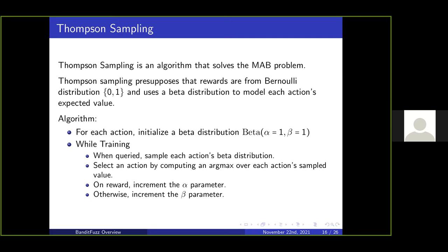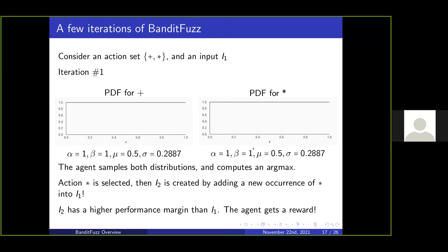For our actual agent algorithm, we use Thompson sampling. Thompson sampling is a really cool algorithm and it can fit on a single slide. It presupposes rewards are from a Bernoulli distribution, either zero or one. It uses a beta distribution to model each action's expected value. We initialize each action to have alpha and beta parameters of one. While we train, we sample each beta distribution to select an action by computing an argmax over it. If we get a reward we increment the alpha parameter, otherwise we increment the beta parameter.